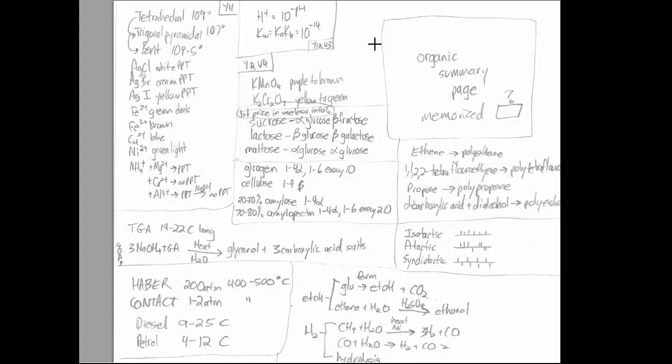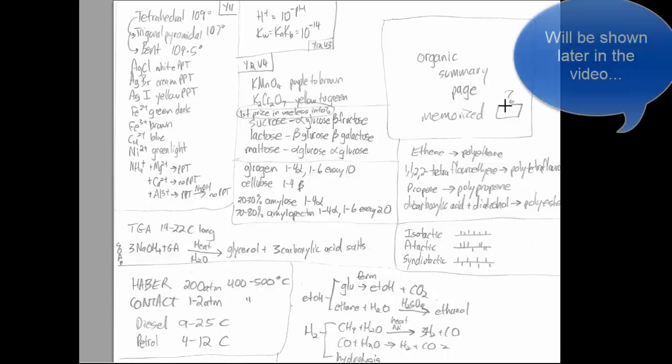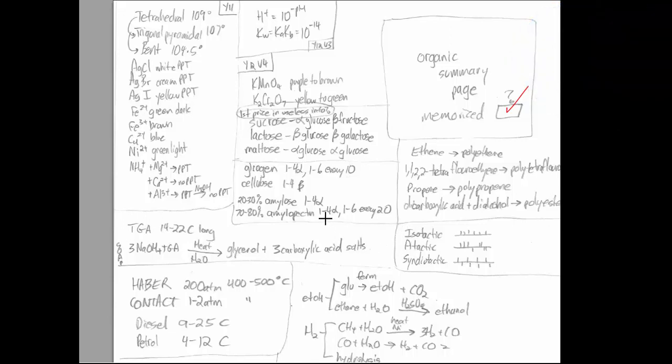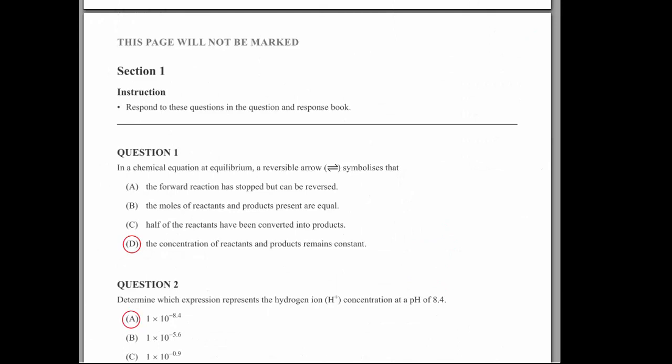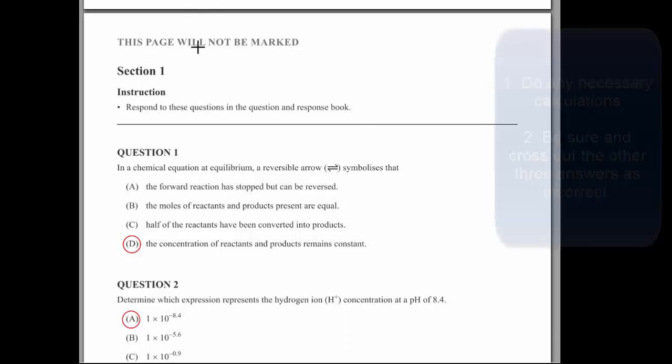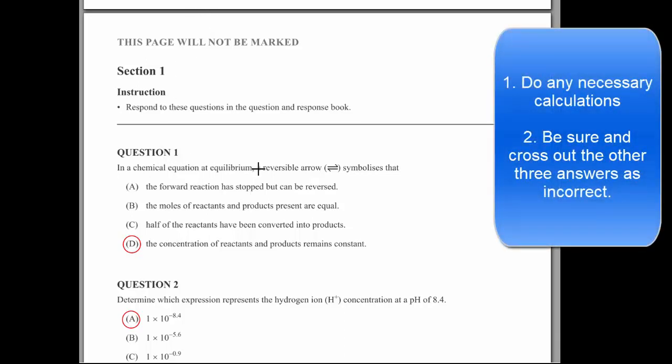So before I engage with the paper, I do an A4 memorization thing. I've gone and memorized the organic summary page and I write down all the things that I can't remember and make sure I've memorized this before I do the exam. So going through this, just some exam technique. We're not just trying to get 100%, we're trying to get a very good 100% on this. And so when we read each question, we want to cross out the ones that we know are wrong.